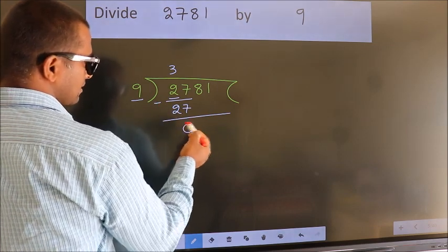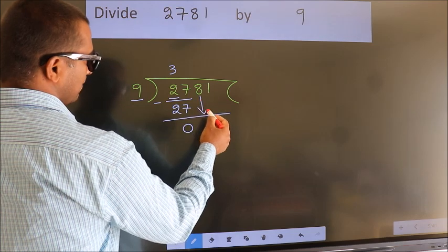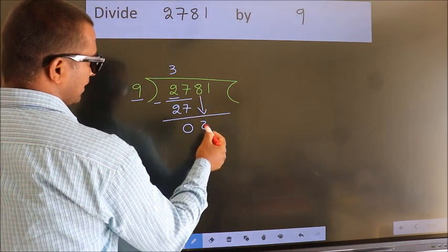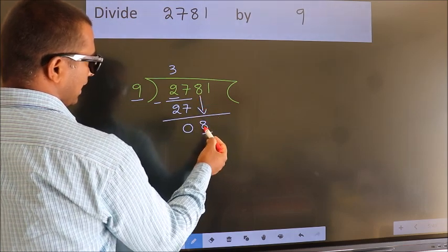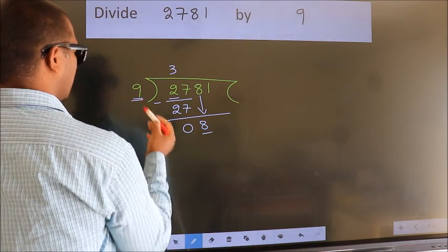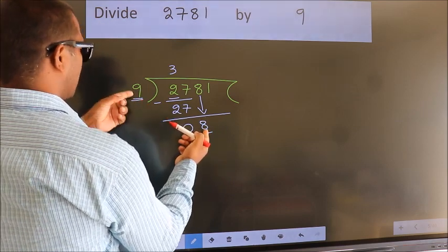After this, bring down the beside number. So 8 down. Here we have 8. Here 9. 8 smaller than 9.